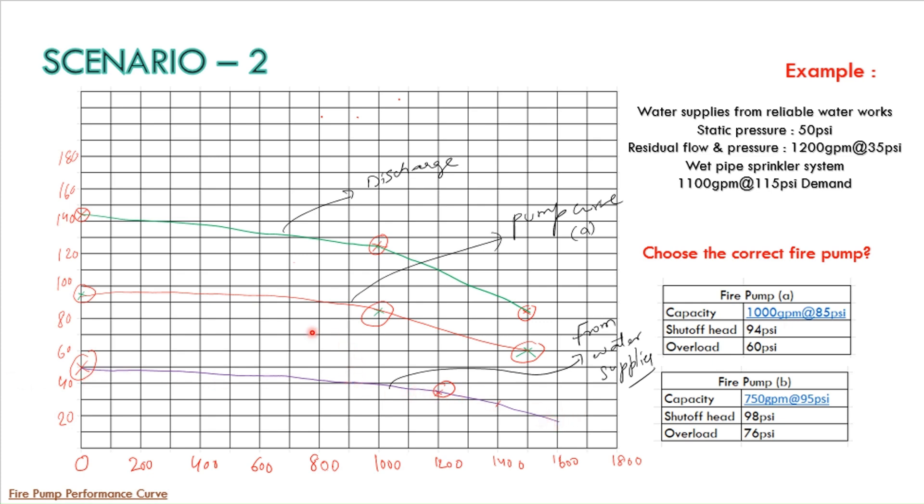Apart from that we have also taken the details of option A fire pump and marked here. If you see 1000 GPM at 85 PSI the marking is here and with shutoff at 94 PSI and overload 1500 GPM at 60 PSI.